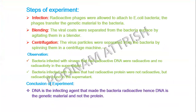The experimental steps taken by Hershey and Chase: Step one is infection — the radioactive phages were allowed to attach to E. coli bacteria and transfer their genetic material. Step two is blending — agitating the mixture so that viral coats attached to the bacterial cell wall get separated. This experiment is also known as the blending experiment because of this step.